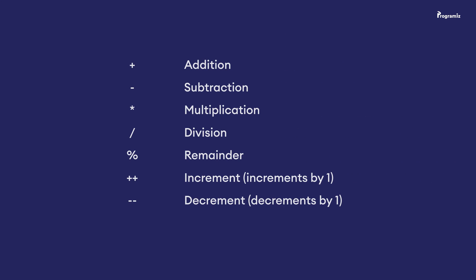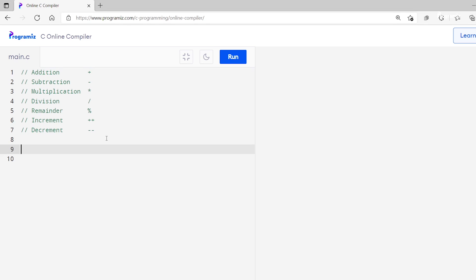Arithmetic Operators are basic operators like plus and minus that allow us to perform arithmetic operations. Here is the list of all Arithmetic Operators available in C Programming. Let me first copy all the Arithmetic Operators in the Code Editor, and we will learn about these operators next.